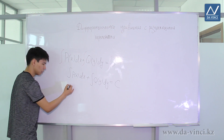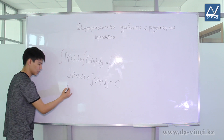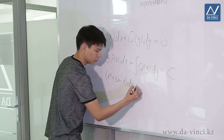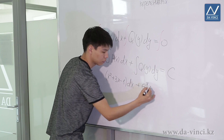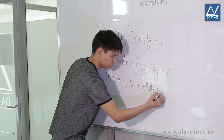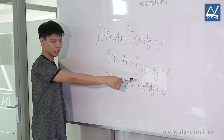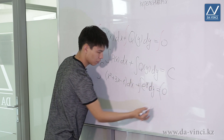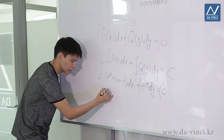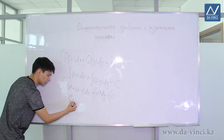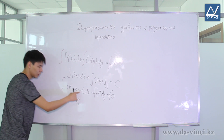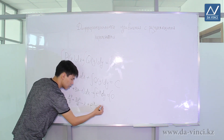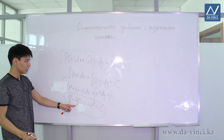For example, let's solve the separable differential equation: (x² + 3x − 1) dx + e^y dy = 0. To solve this, we take the integral on both sides. The integral of x² + 3x − 1 gives: x³/3 plus 3x²/2 minus x. The integral of e^y is e^y. And all of this equals the constant c. This is the general solution, or integral, for this equation.